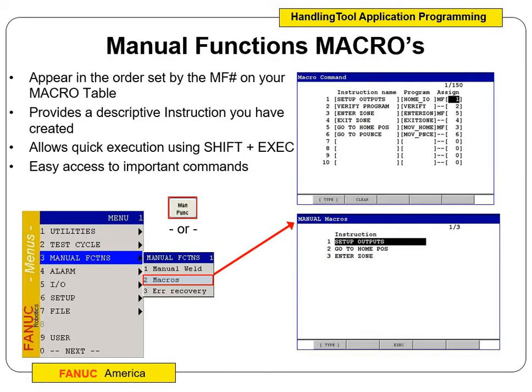We can use manual functions for macros as well. They appear in the order set by the MF number on your macro table. Looking at the setup, the macro function number shows on the screen. Under menu, you can go to manual functions, go down to macros, and set up different outputs for manual functions.